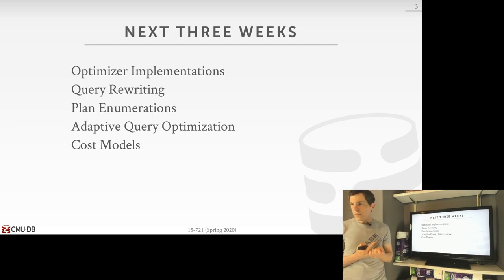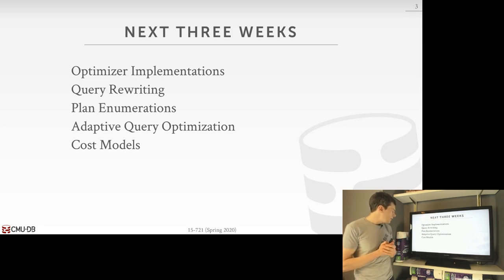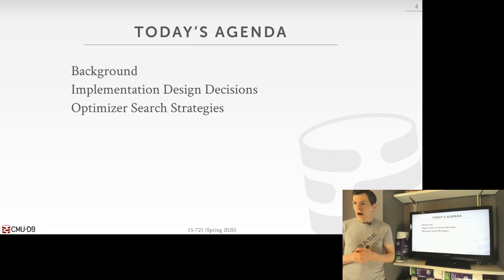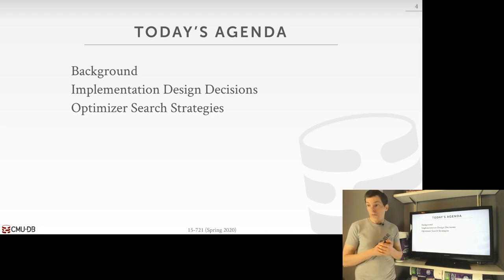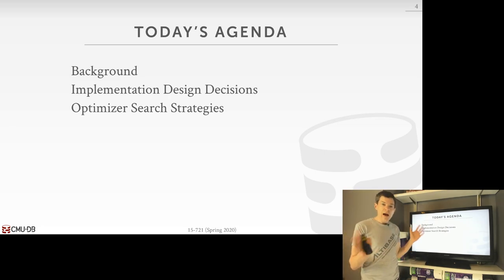For today, we're mostly talking about optimization search strategies, because that's one of the two main parts you need to have. We'll go through the different approaches people have tried to build a query optimizer over the last 40-50 years, and that'll motivate why we want to use a more sophisticated dynamic programming technique, or the cascades technique you'll read about for next class.